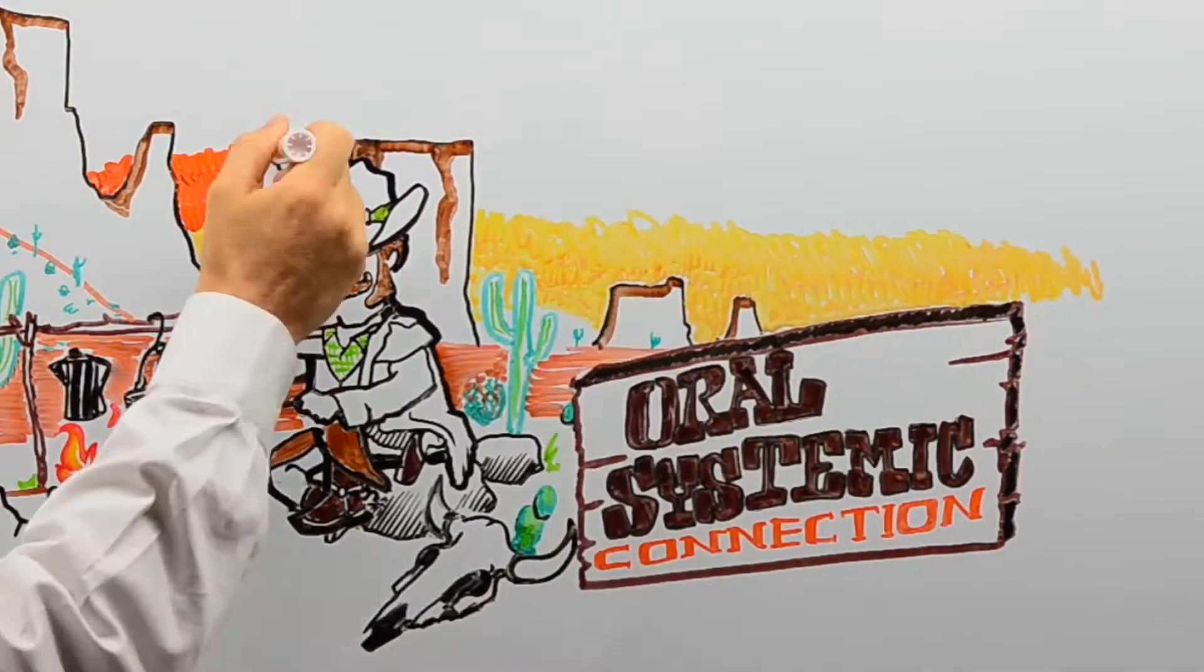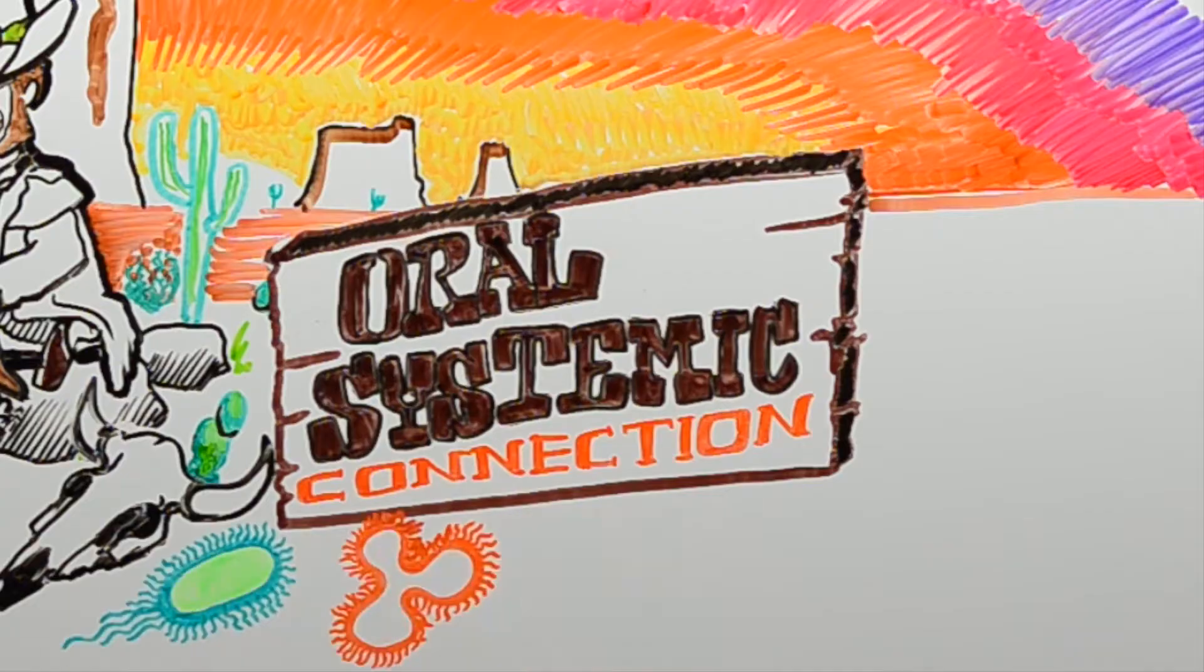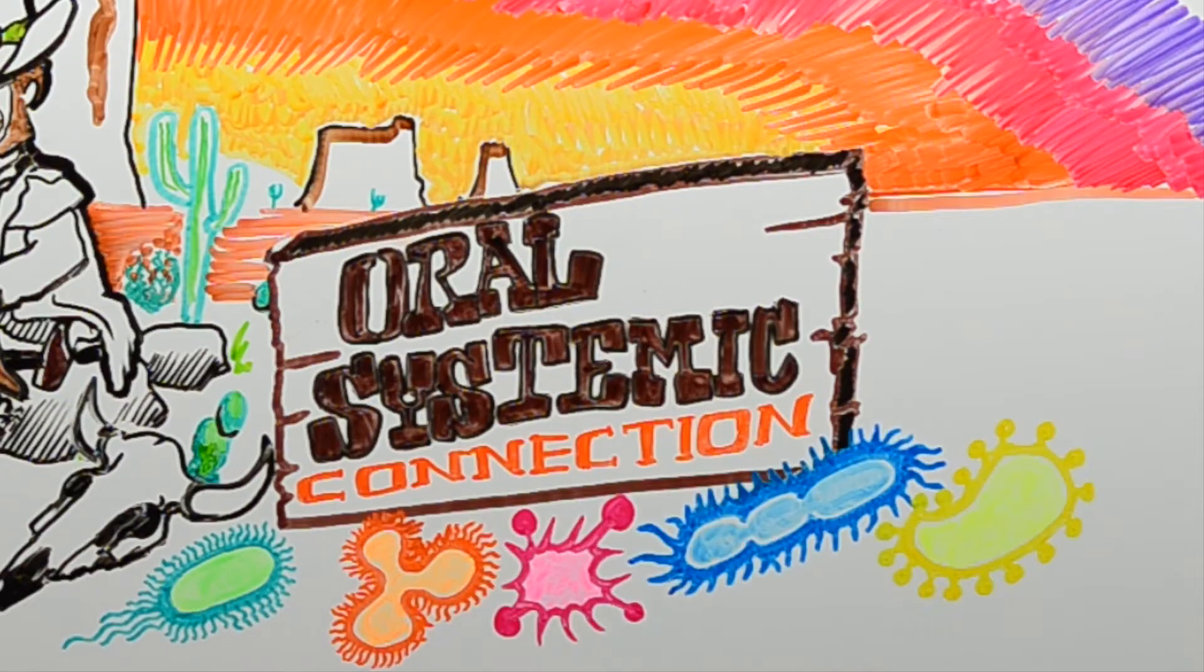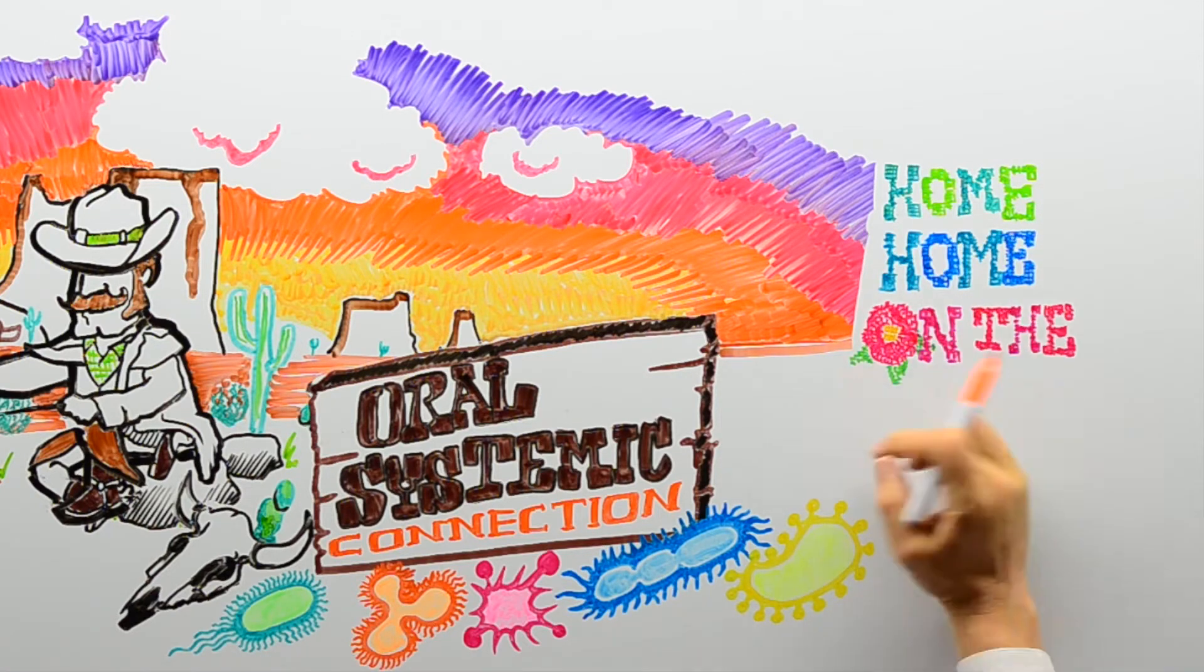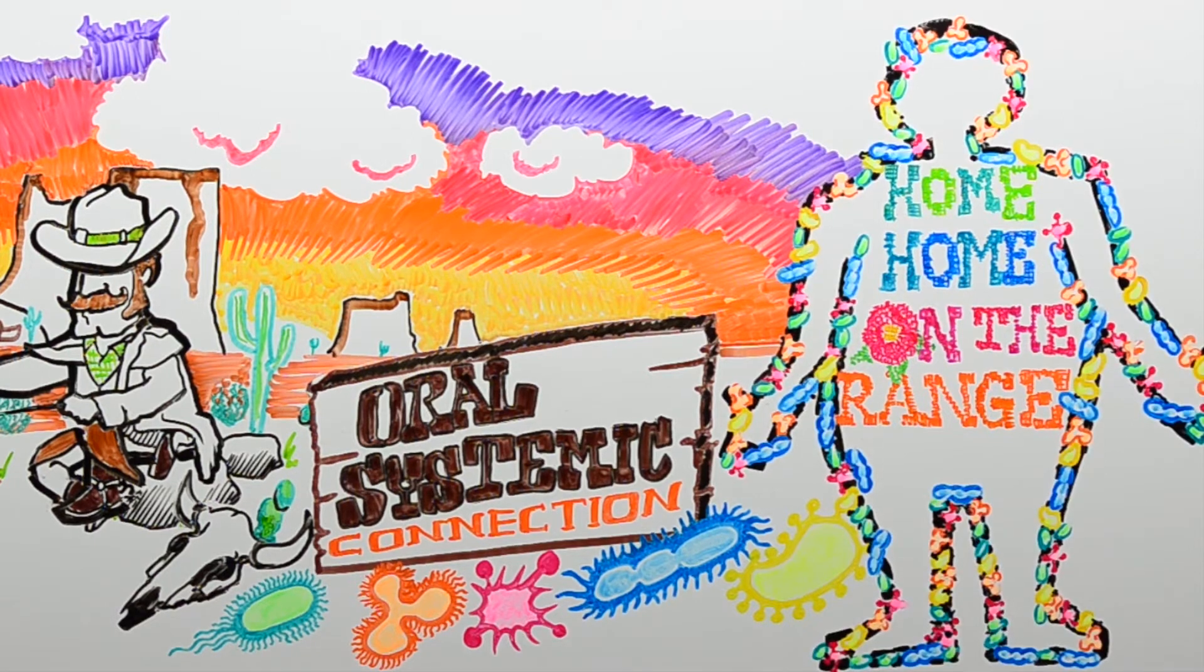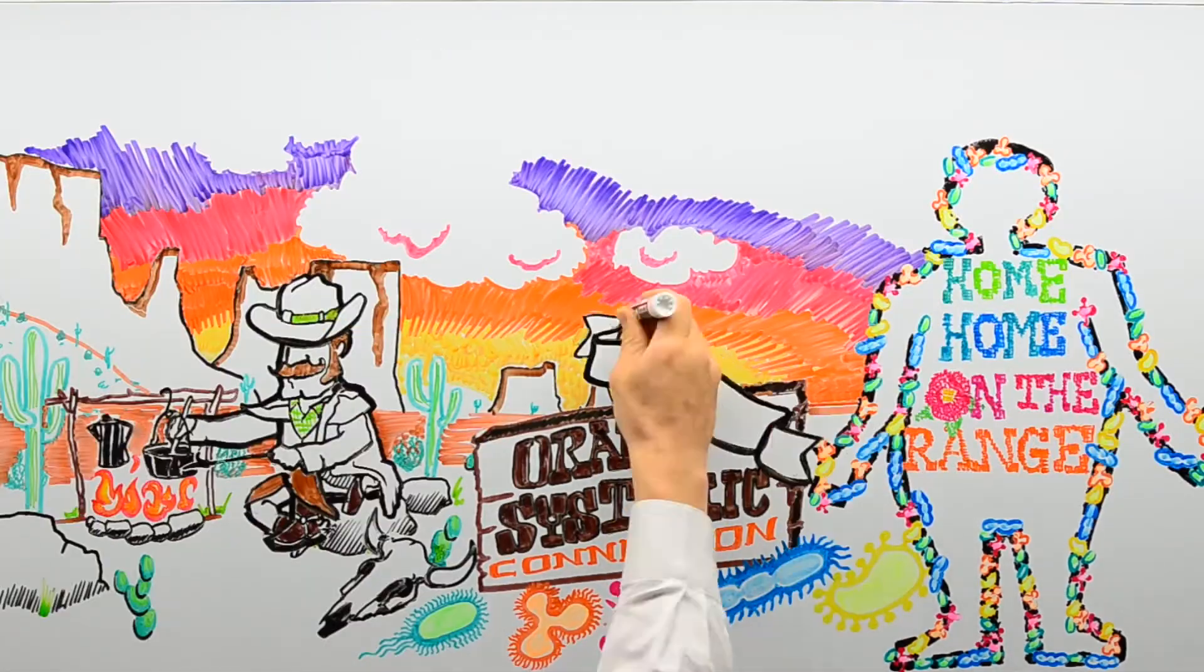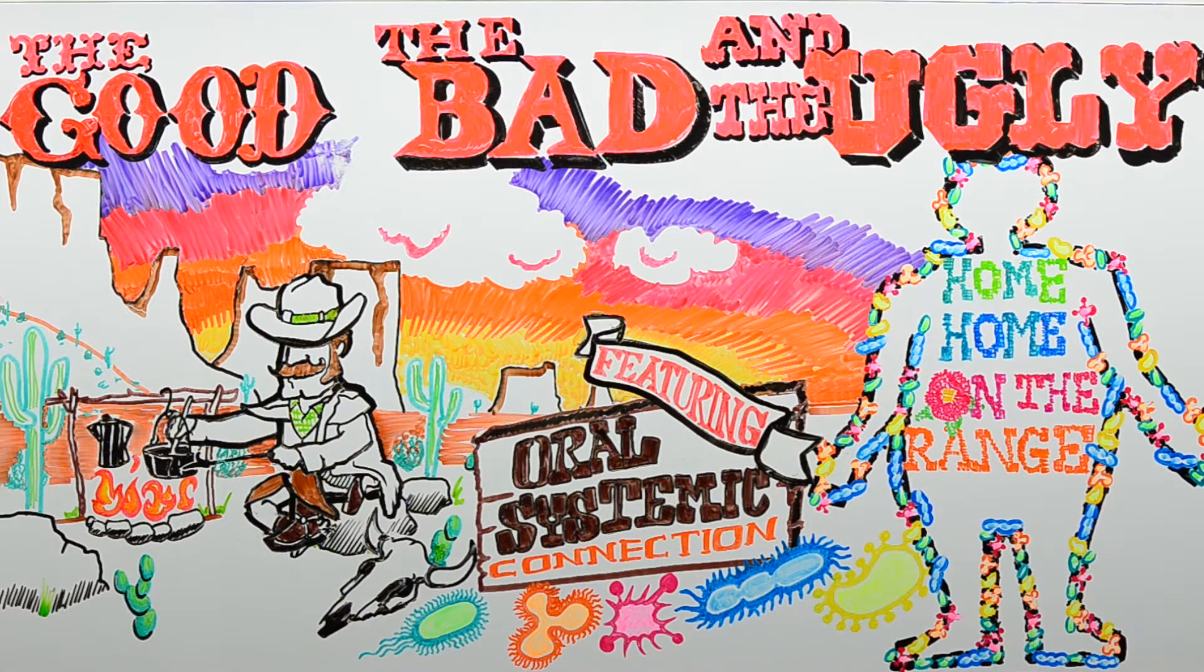This new frontier you ain't going to find out under the setting sun. No, I'm talking about teeny tiny critters, and their home on the range is inside your body and your mouth. This frontier is you, your microbiome. You see, this oral systemic connection features the good, the bad, and the ugly.